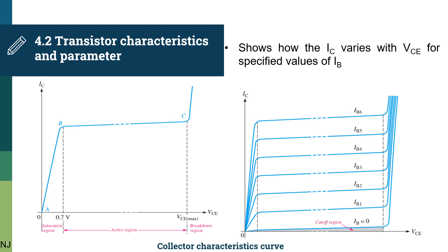Now let's start with transistor characteristics and parameters. For specified values of the base current IB, a set of collector characteristic curves can be generated to show how the collector current IC varies with the collector to emitter voltage VCE. This is the curve for a single base current value, while this is for a set of base current values, also known as a family curve.